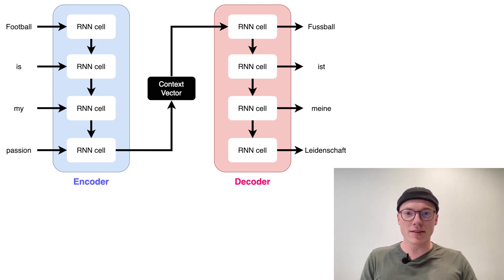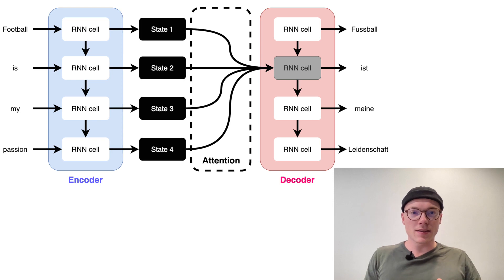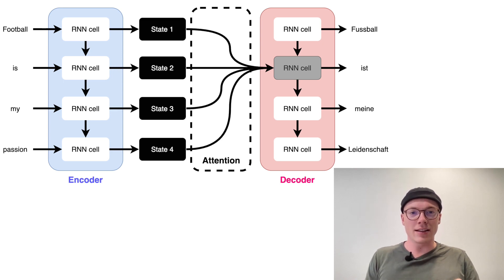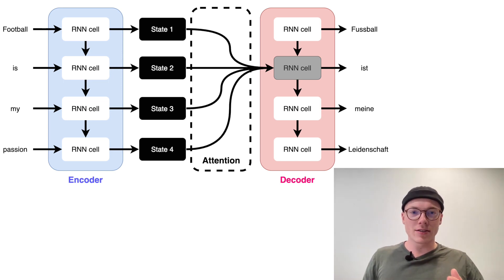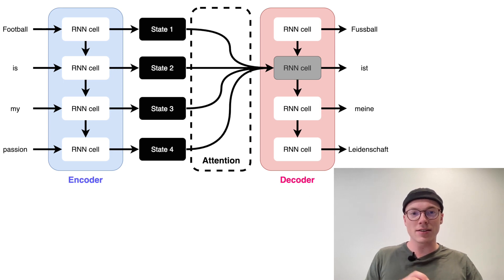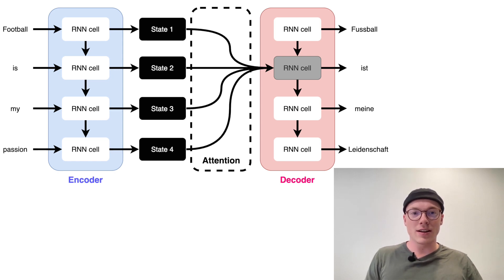That's why in 2014, Bahdanau and others introduced an architecture including for the first time an attention mechanism. As you can see, this attention mechanism allowed the model, in each decoder cell, to access all the encoder hidden states. So instead of having one fixed-size vector, each specific decoder cell can access all encoder hidden states and decide which encoder hidden state is most important for that particular token being decoded. This idea was basically new — and that's why it's called attention.